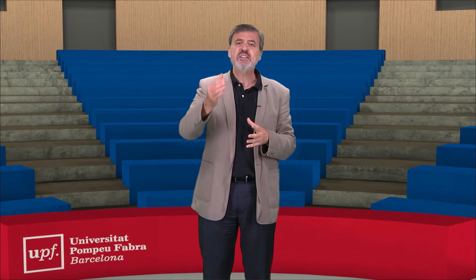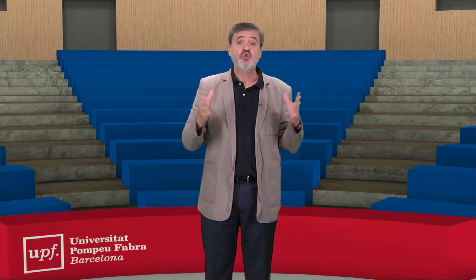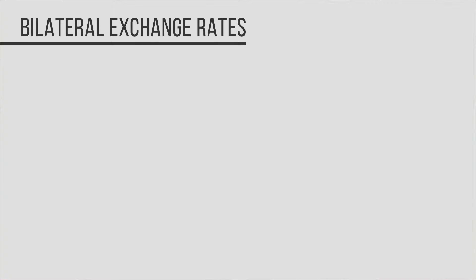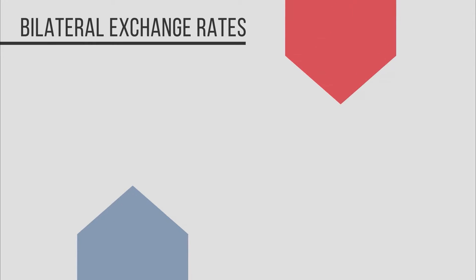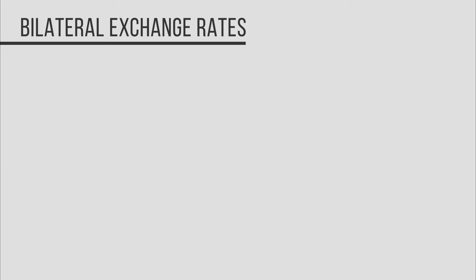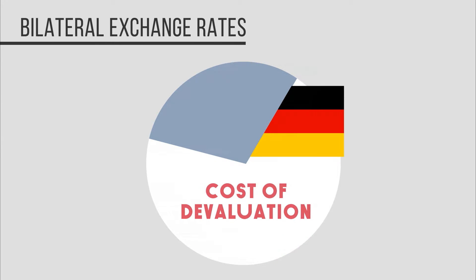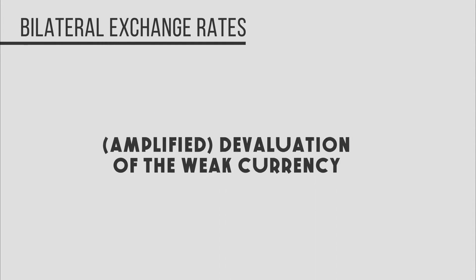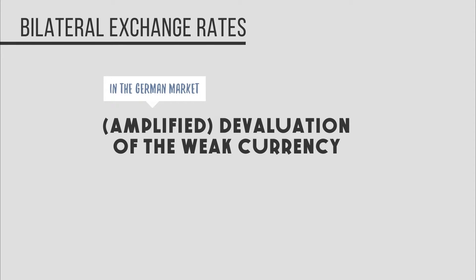With high inflation and high unemployment as the most salient problems in the 1970s, German assistance was welcomed across Europe. Germany assisted its partners through a policy of joint administration of bilateral exchange rates: the German currency would revalue at the same time as the partner's currency devalued. Through this joint coordinated action, Germany offered to pay part of the cost of the devaluation of other European currencies, amplifying the effect of a devaluation of a weak currency in the German market.